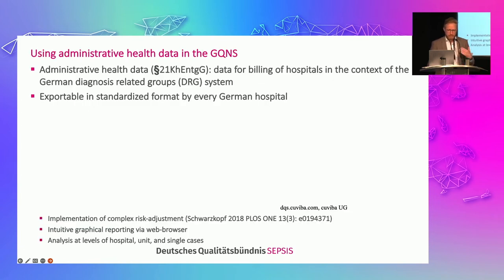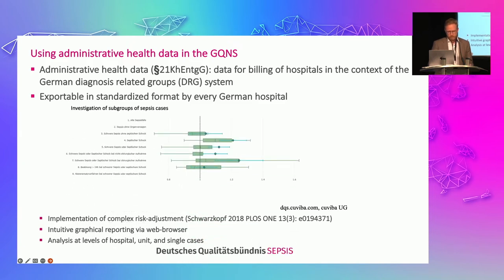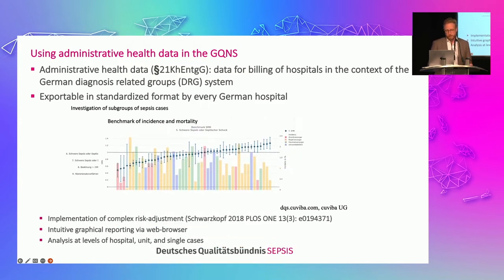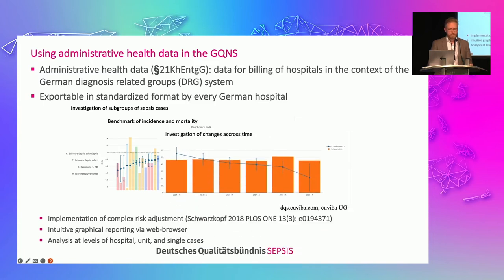Administrative data are used for billing of hospitals in the context of the German diagnosis-related group system, which means every hospital can export this data easily in a standardized format. Based on this data, we developed a quite complex system of quality reports that allowed hospitals to investigate different subgroups of patients with sepsis, do benchmarking with other hospitals, and also monitor improvements across time.